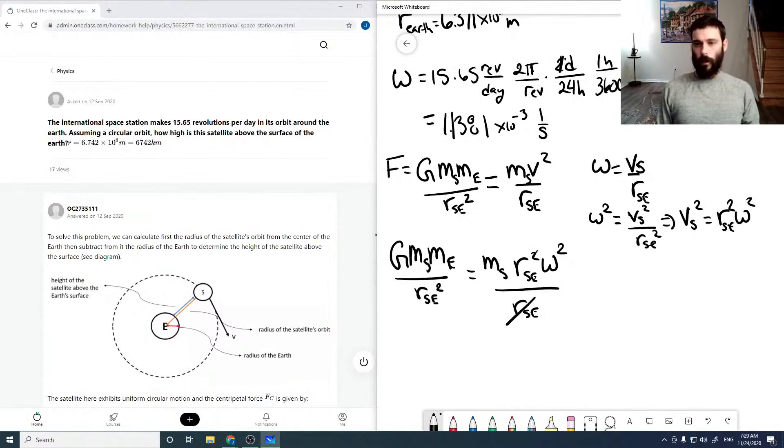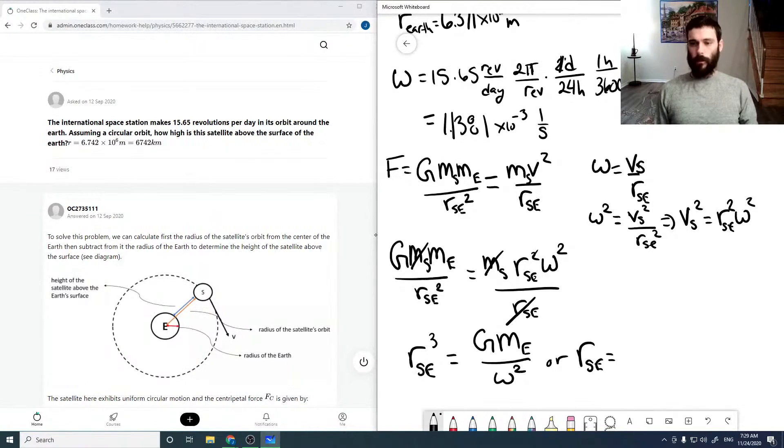So we can get some cancellations going here. So this is going to cancel one of these. The mass of the satellite will cancel. And solving for our radius, we get G, M_Earth over omega squared, or our radius is the cube root of this factor.